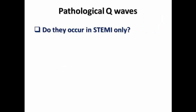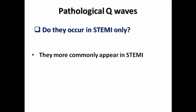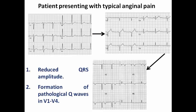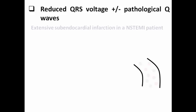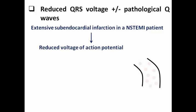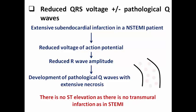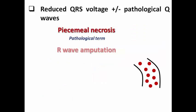Do pathological Q-waves occur in STEMI only? They more commonly appear in STEMI, but they can appear in non-STEMI with extensive subendocardial infarction. In this ECG example from the low QRS voltage lecture: the patient had persistent chest pain, the first ECG showed normal sinus rhythm with normal R-wave progression, then R-wave progression became delayed until the appearance of pathological Q-waves in V1–V4 with low QRS voltage. The explanation is extensive subendocardial infarction in non-STEMI, resulting in reduced action potential reflected as reduced R-wave amplitude and pathological Q-waves — termed R-wave amputation.